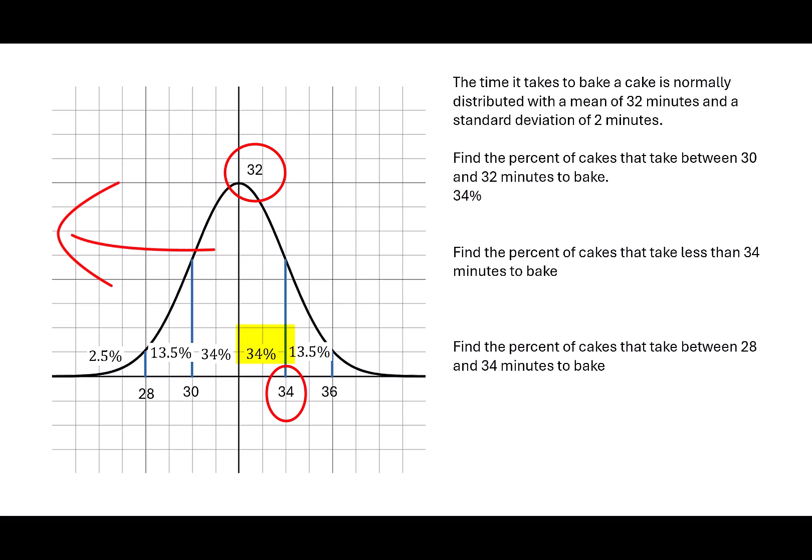I have two numbers to add, the 50 percent that's less than 32 and the 34 percent that's between 32 and 34. 50 percent plus 34 percent gives me a total of 84 percent.